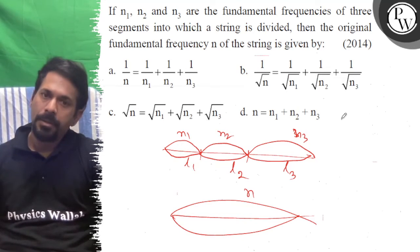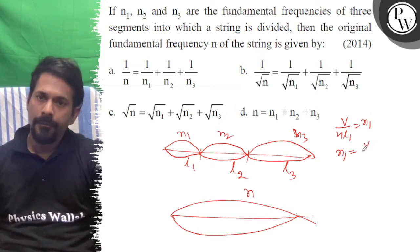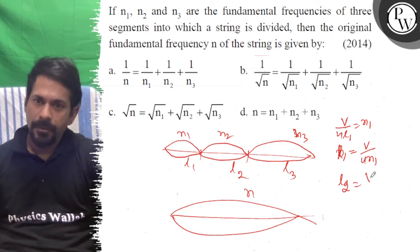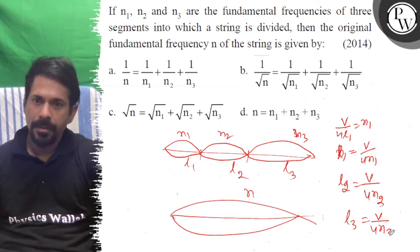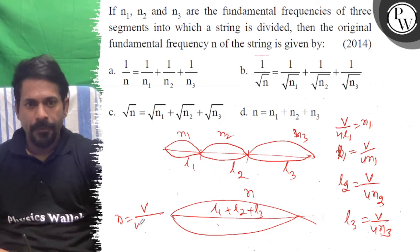So V over 4L1 is equal to N1, which means L1 is equal to V over 4N1. Similarly, L2 is equal to V over 4N2, and L3 is equal to V over 4N3. Now, the total length is L1 plus L2 plus L3, so N is equal to V over 4 times (L1 plus L2 plus L3).